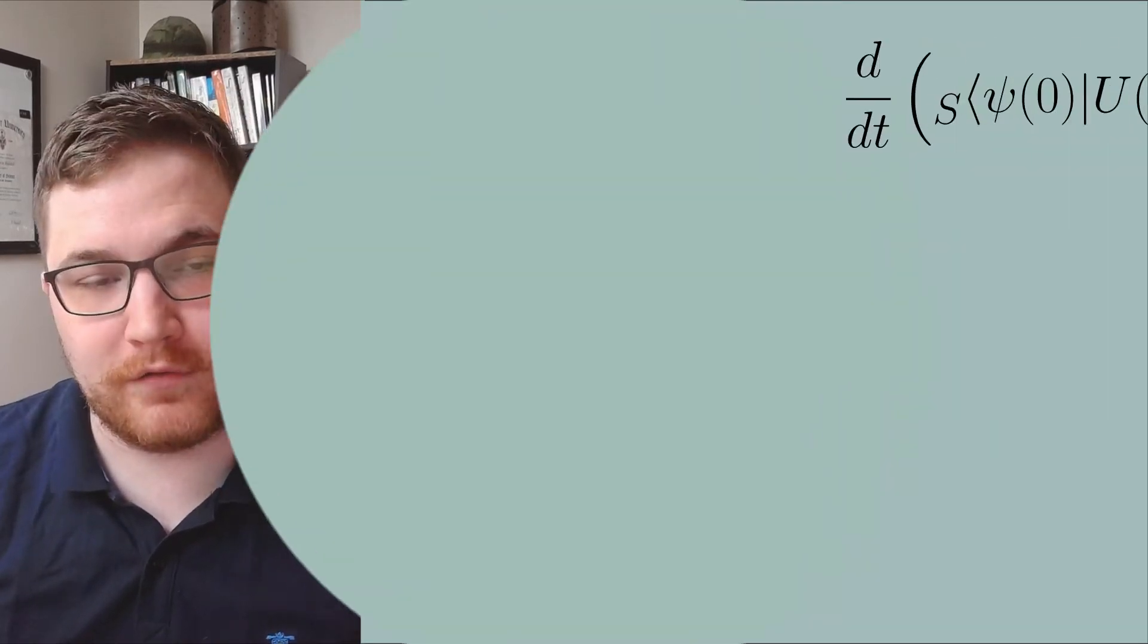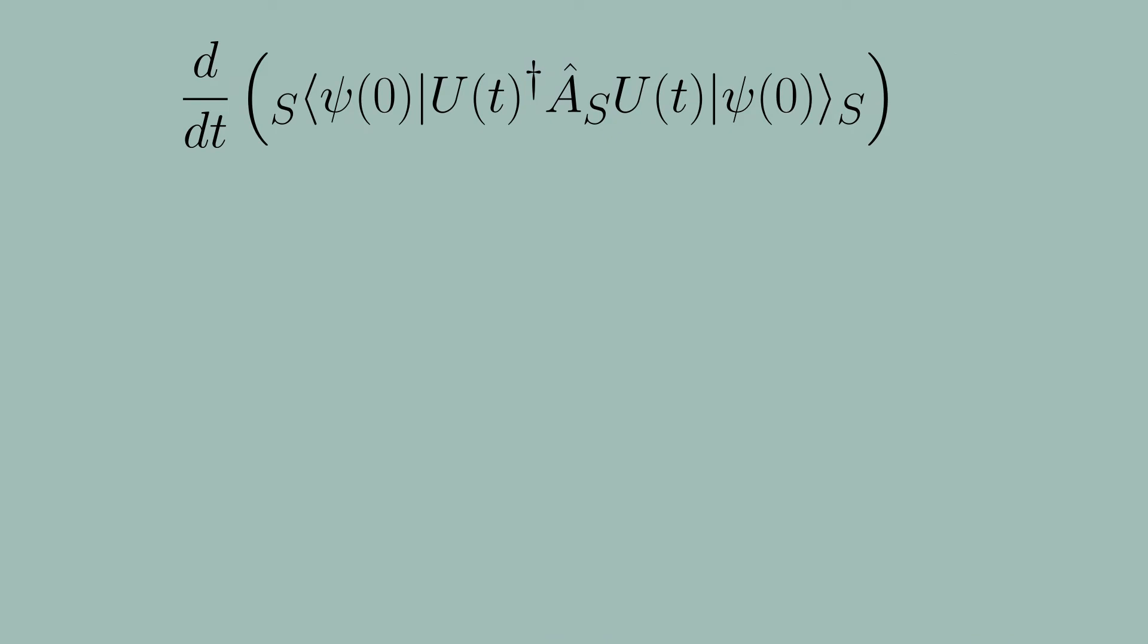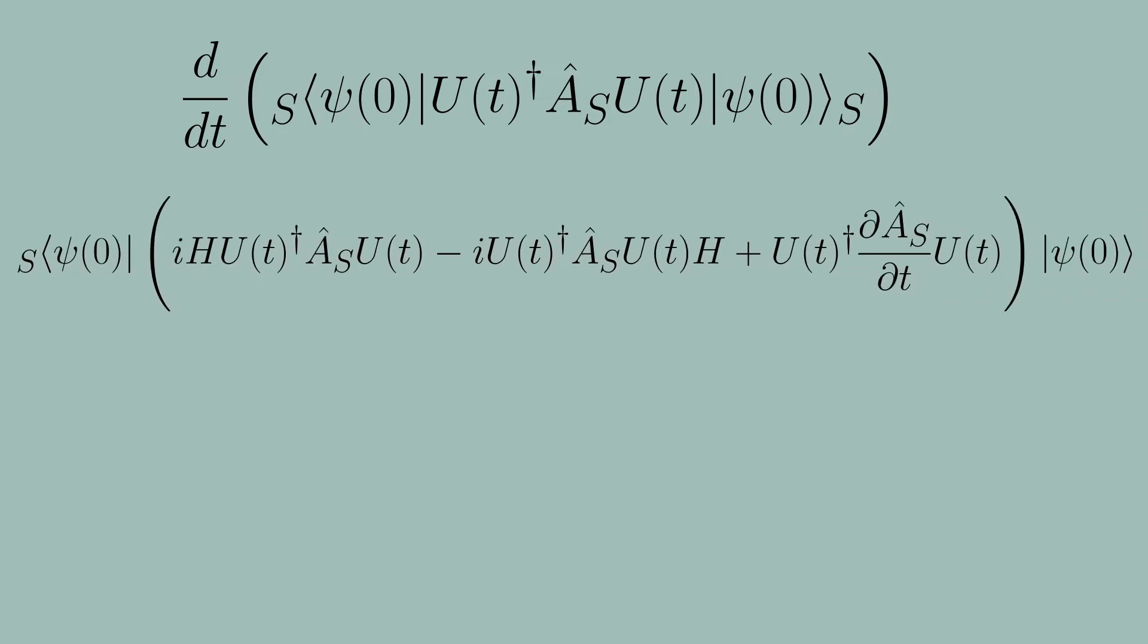To find the equation of motion of the observable, we can simply take the derivative of the expectation value of the observable with respect to time. From there, we can see the following equation after using the product rule. We see from the first two terms that they can be expressed as a commutator.